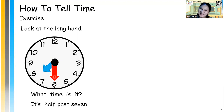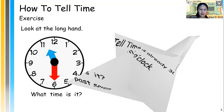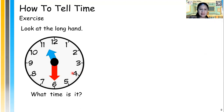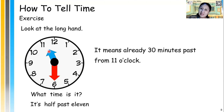Do you understand? Good job. Now the next one — you do it by yourself. Remember, it means already 30 minutes past from 7 o'clock. What about this one? What time is it? It's half past 11. Good job — it means it's already 30 minutes past from 11 o'clock.